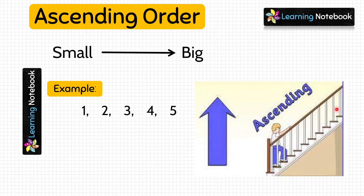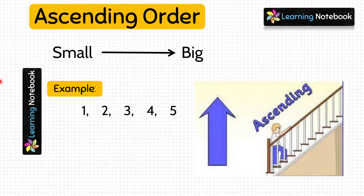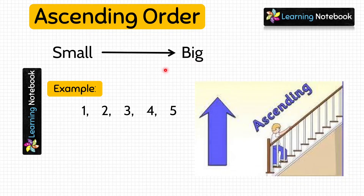Students, look at this picture. When we move from downstairs to upstairs it is called ascending, so you can easily remember ascending order from this picture. To revise: ascending order means arranging numbers from small to big, and remember that in ascending order the numbers keep on increasing.